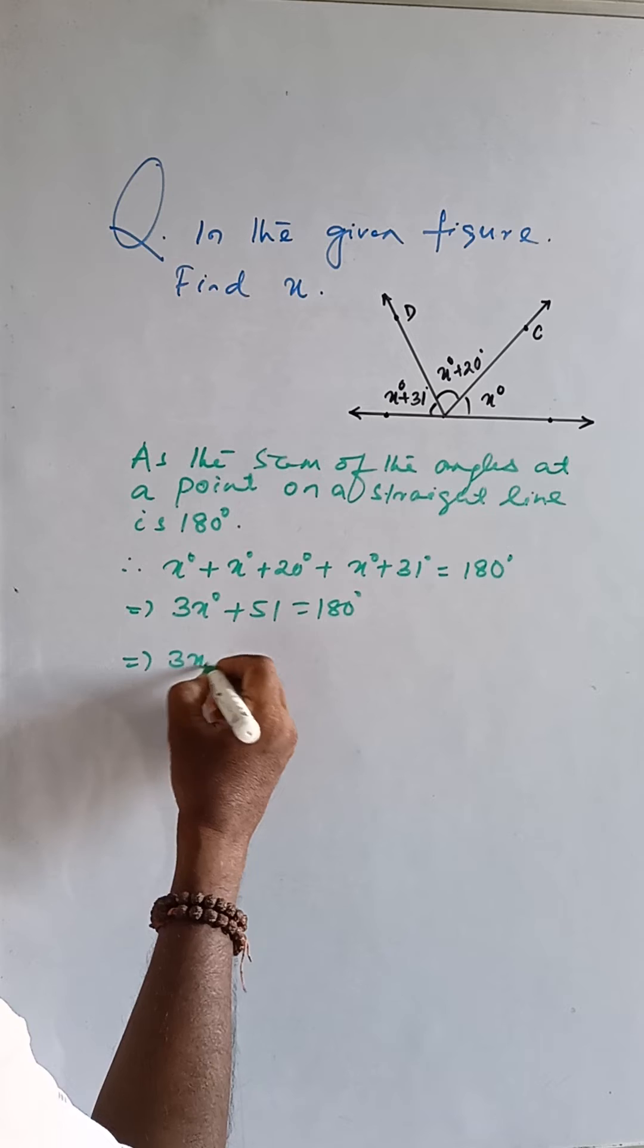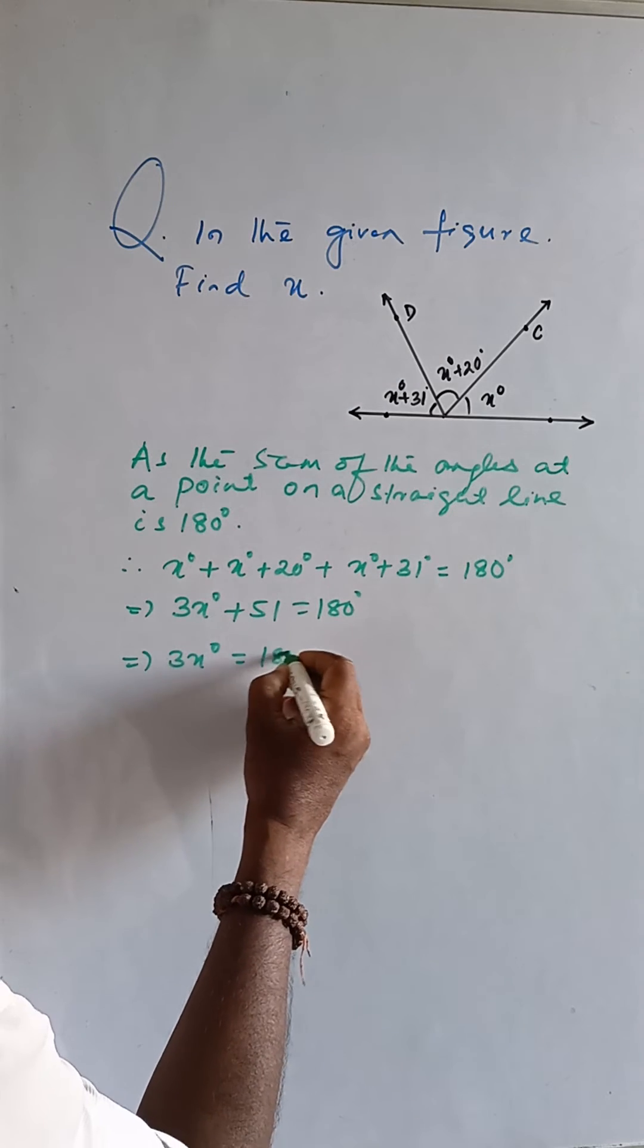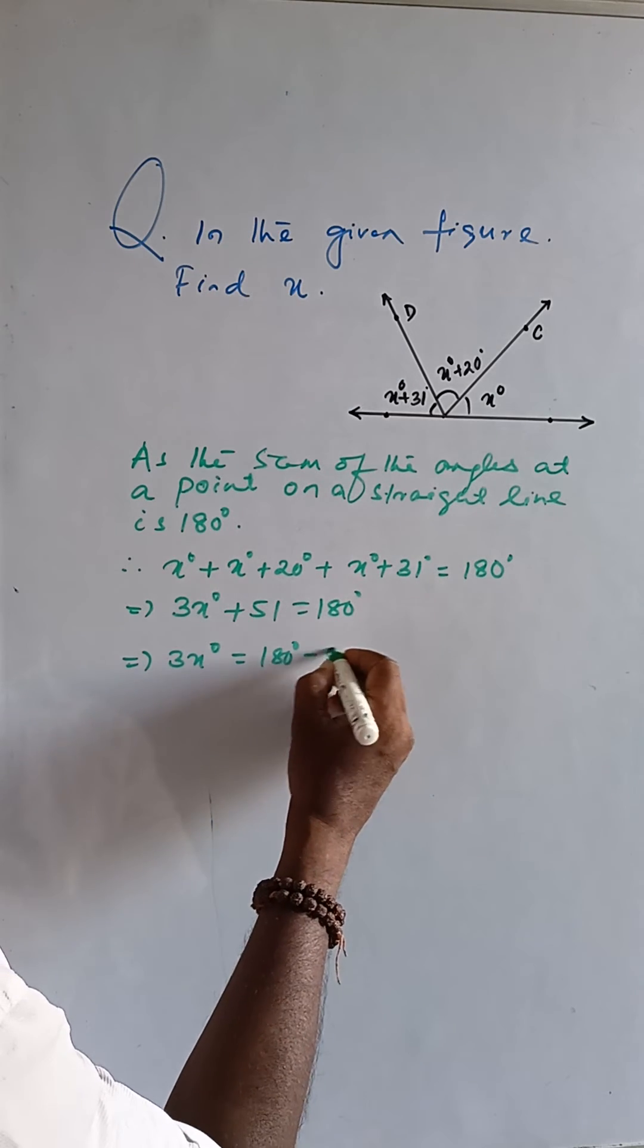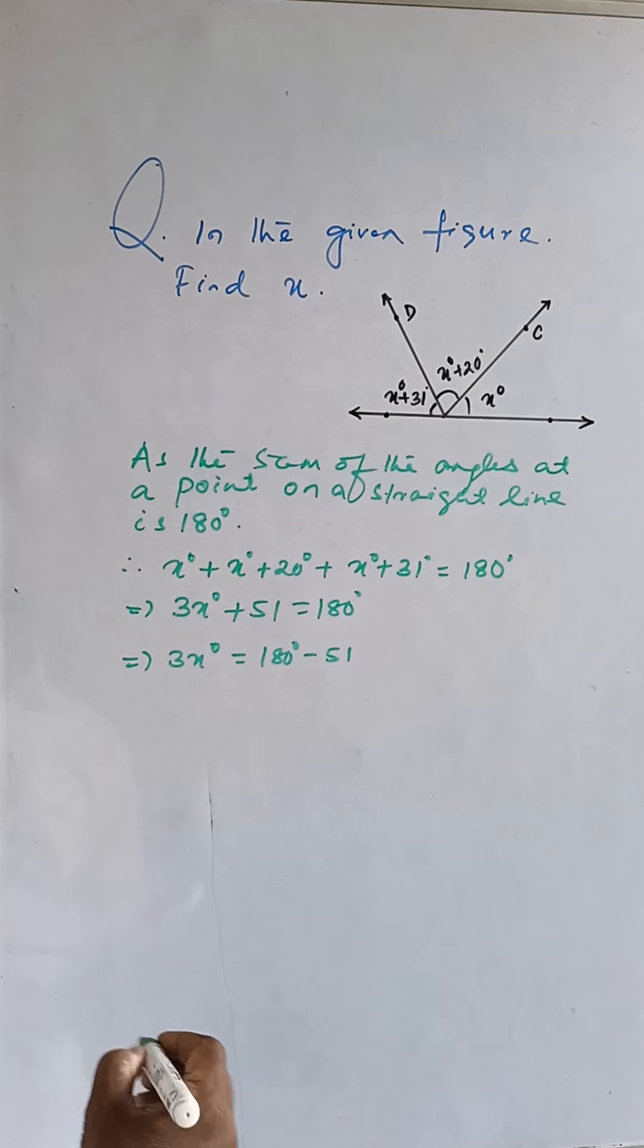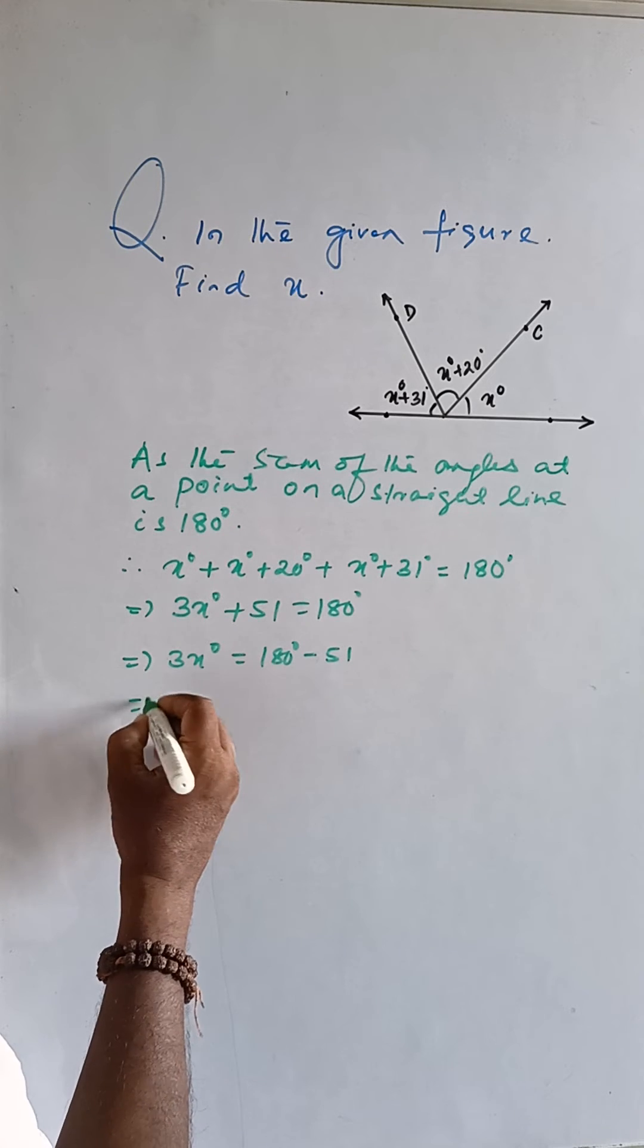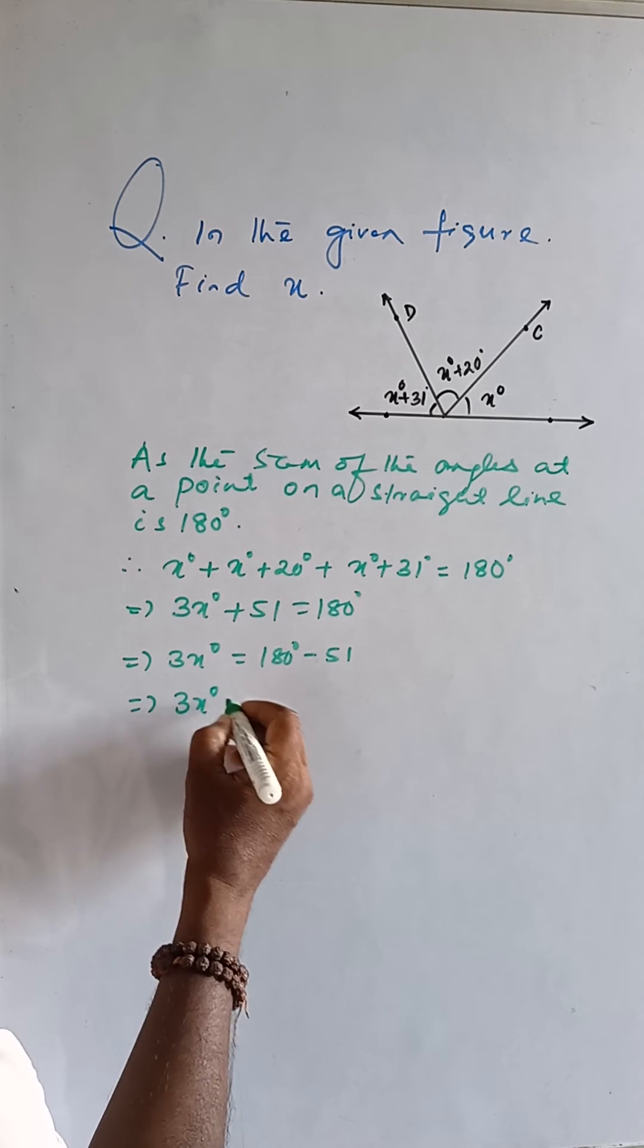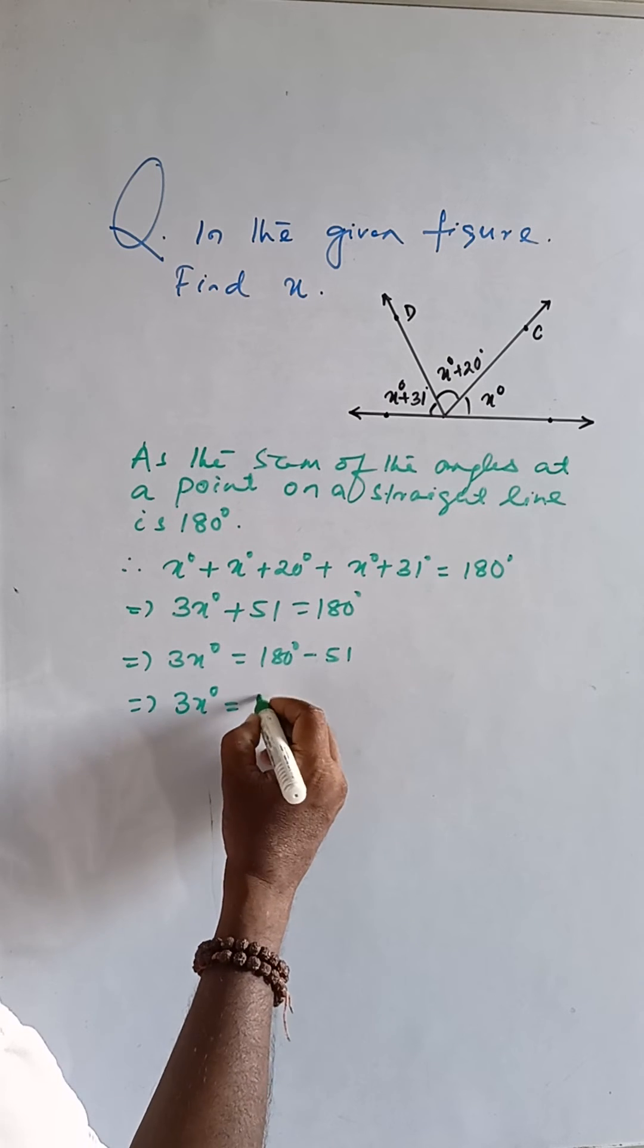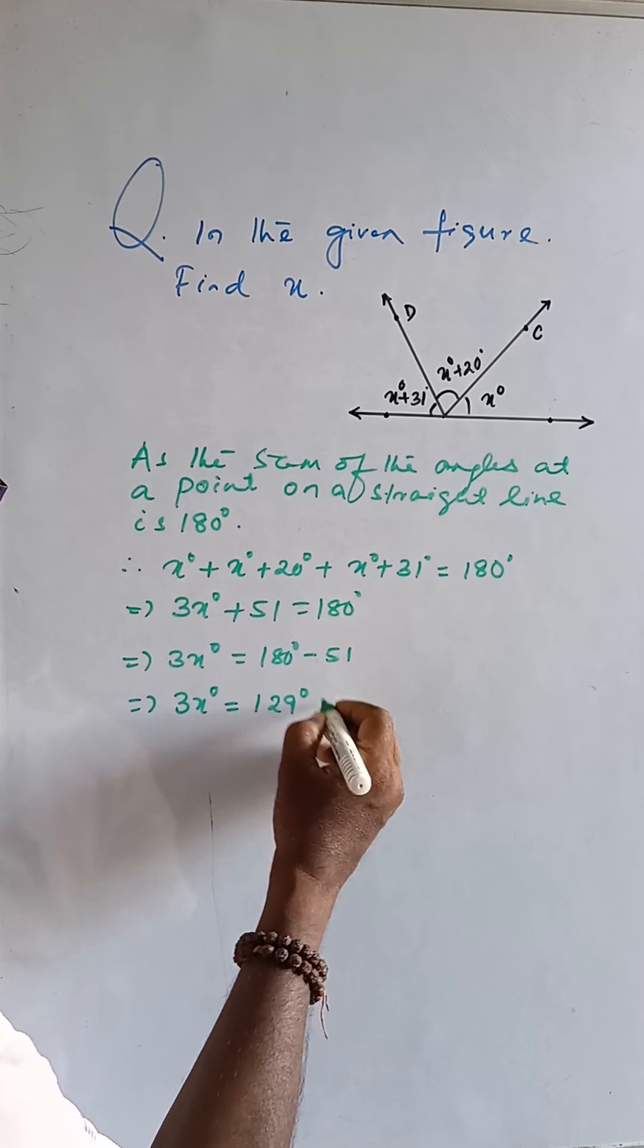Then 3x degrees is equal to 180 degrees minus 51 degrees. Then 3x degrees is equal to 129 degrees.